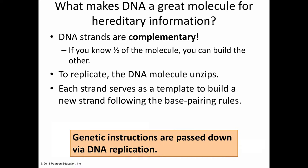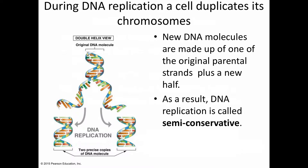If you were replicating an entire chromosome, you'd start with one DNA molecule — two strands — and after unzipping and replicating it, you'd have two double-stranded DNA molecules. So you've copied everything. During DNA replication, a cell copies all of its chromosomes. Here you can see the original DNA molecule getting unzipped, separated, and then a complementary strand being built based on the original strands.